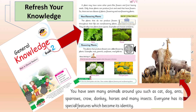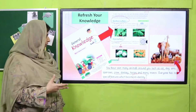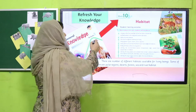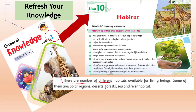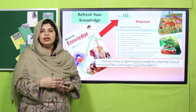In grade 2, you studied that in the wide variety of plants we categorize them as flowering and non-flowering plants. Also, you studied that there are so many different kinds of animals and we can identify each different animal from its specific character to differentiate it from other kinds of animals. In grade 3, you studied again that there are a number of different habitats, and in every different habitat there is a specific kind of life — animals or plants.